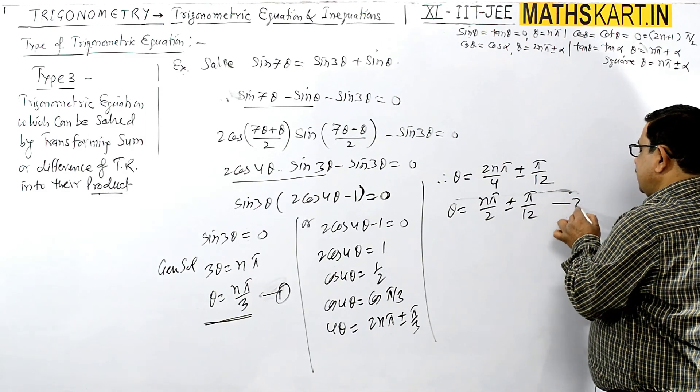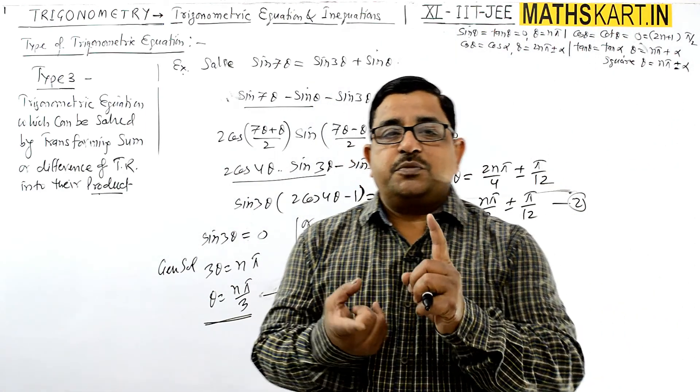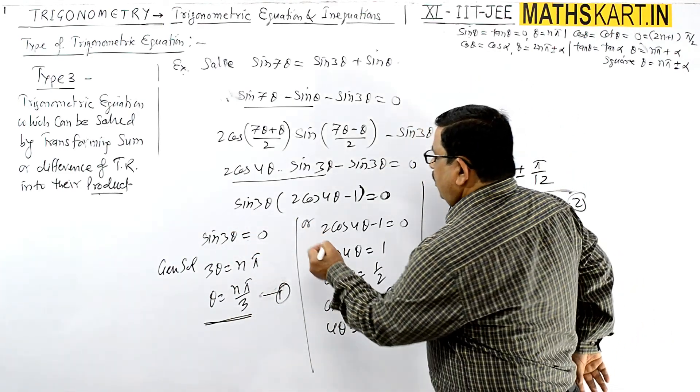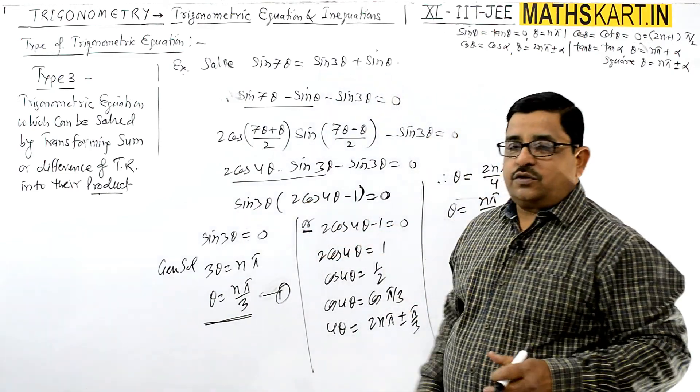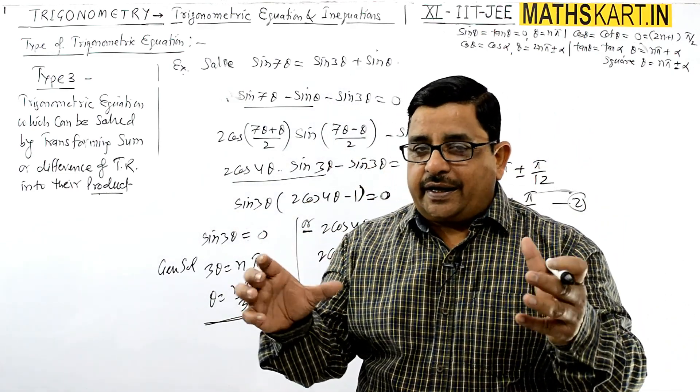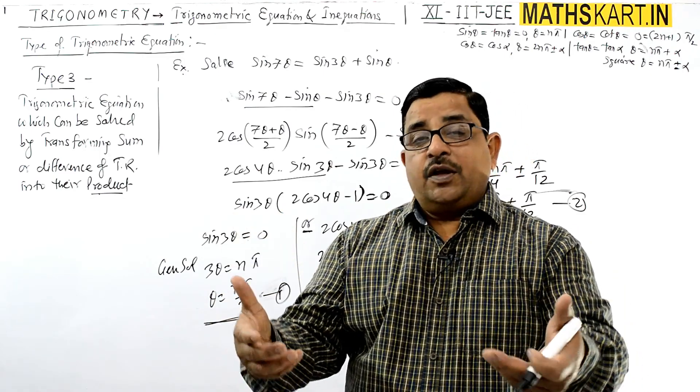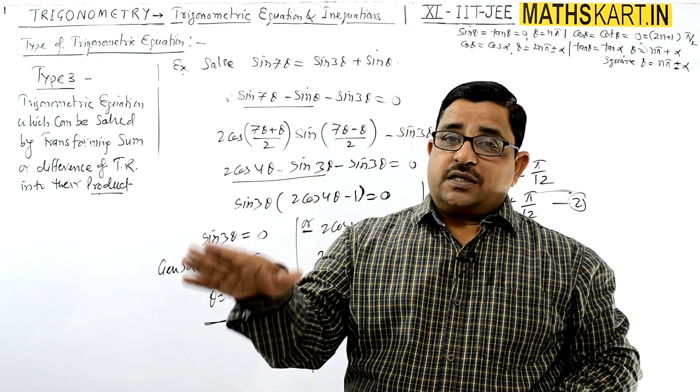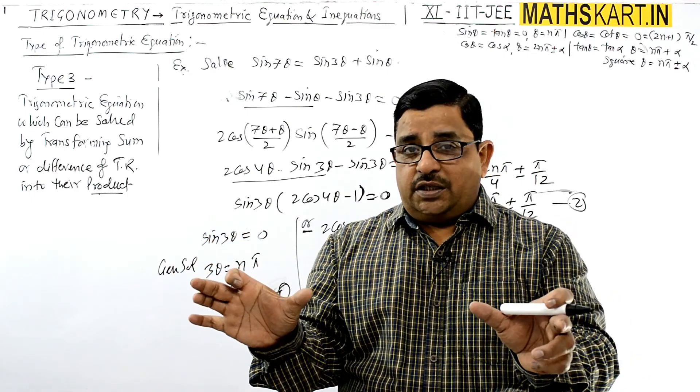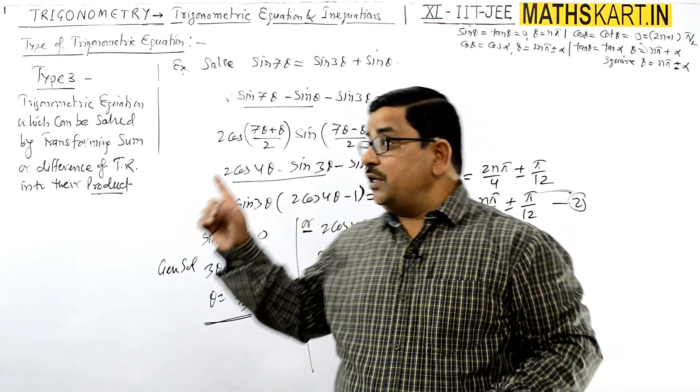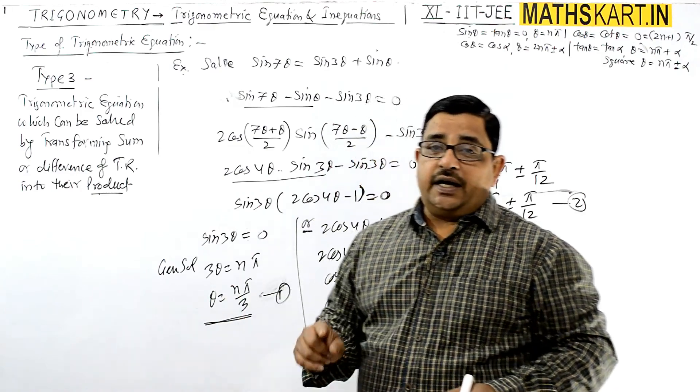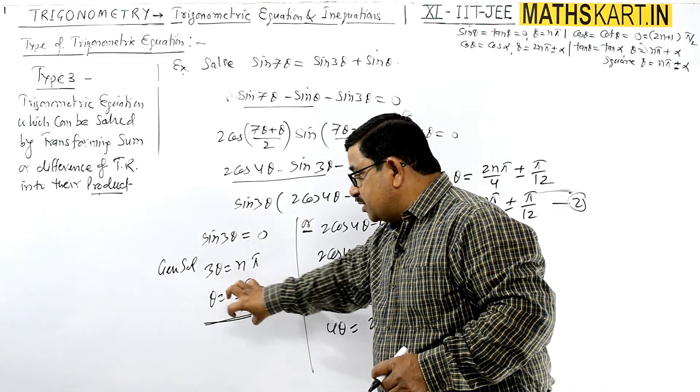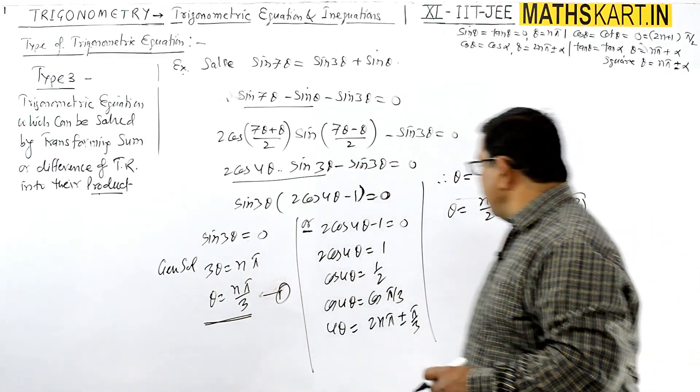These are the two solutions, and between both solutions we use OR, because when you write factors as first factor equals zero or second factor equals zero, this is in factored form. So in the solution also, we use OR. Now if there is a restricted domain given, like θ belongs to [-π, π], then you find values within that range from both solutions.